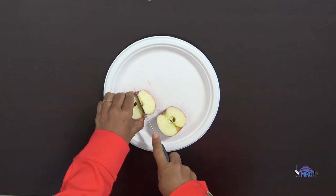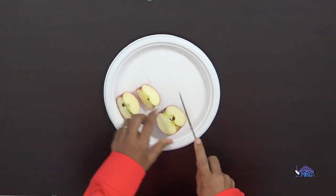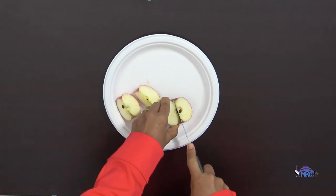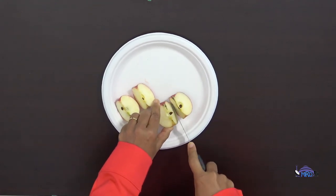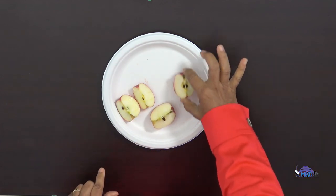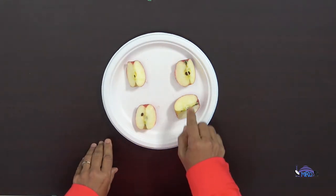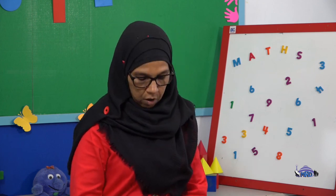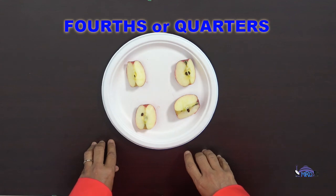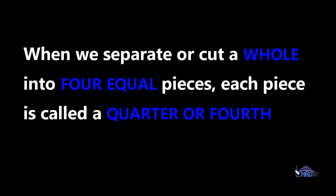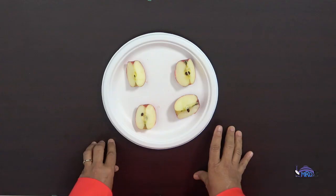But look and see what we can do with our two halves. We can take our knife and separate or cut it again into more equal pieces. One, two, three, four. Each piece is equal. We call each part a fourth or a quarter. When we separate or cut a whole into four equal pieces, each piece is called a quarter or fourth.